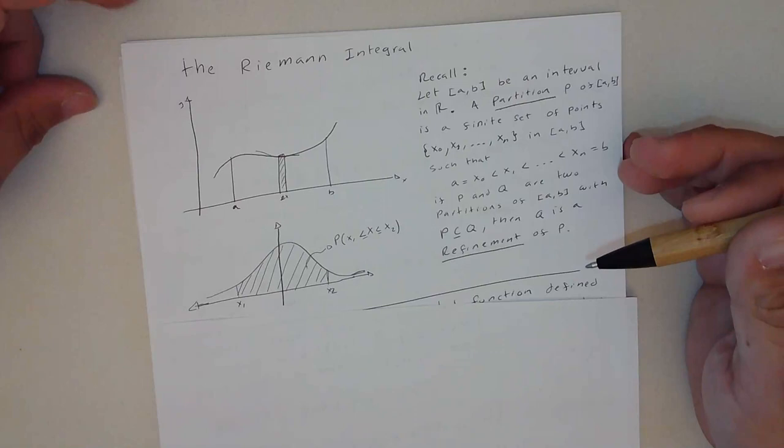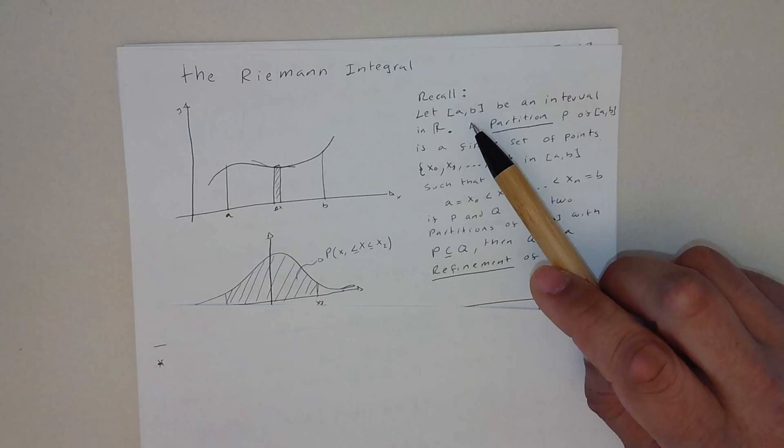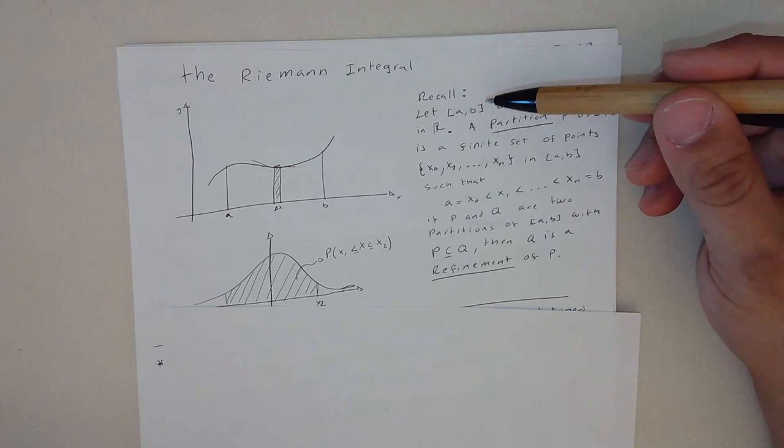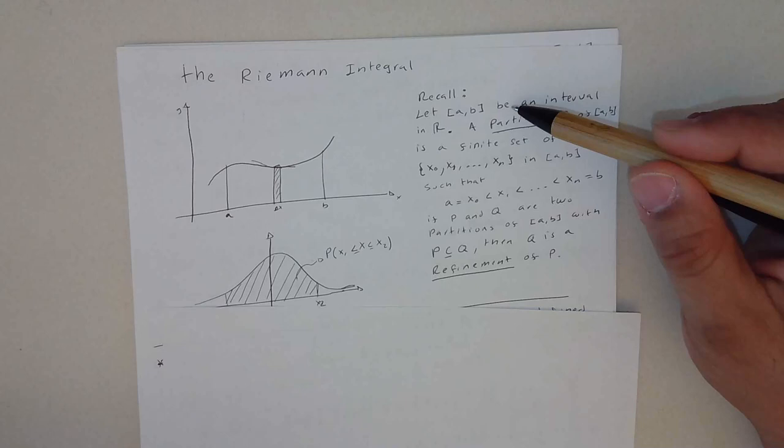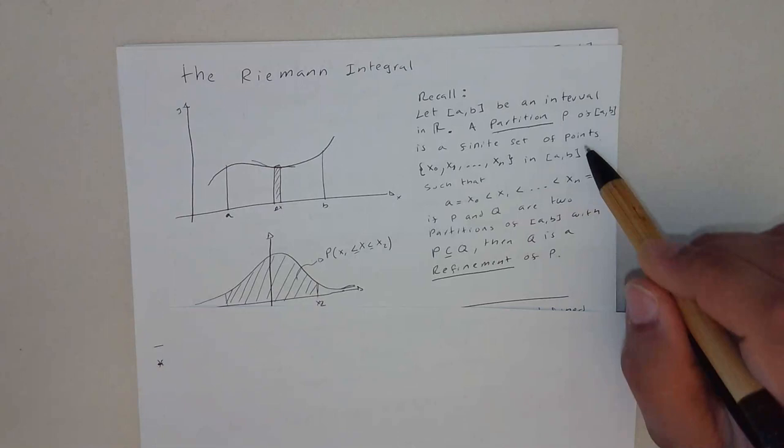But the Riemann integral has actually a formal definition, and that is the purpose of this video. So we have to recall some concepts. Like if we have a closed interval, which we know in the real numbers, a closed interval has some properties that we also have in real analysis. If we have this closed interval, a partition P of this closed interval is a finite set of points.